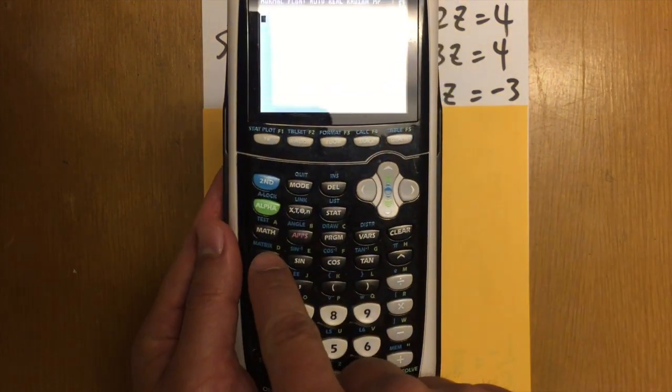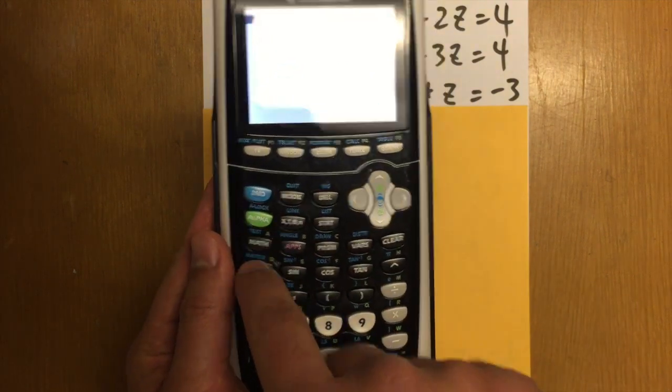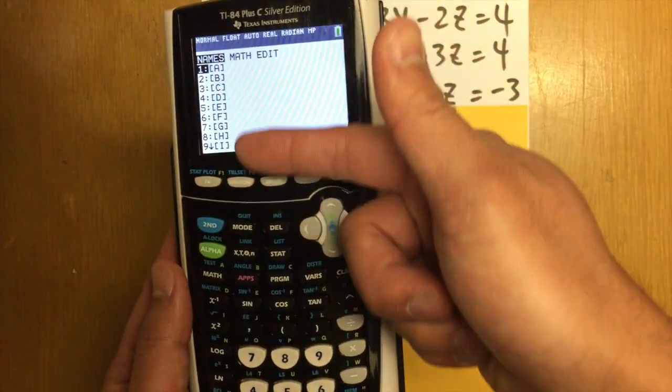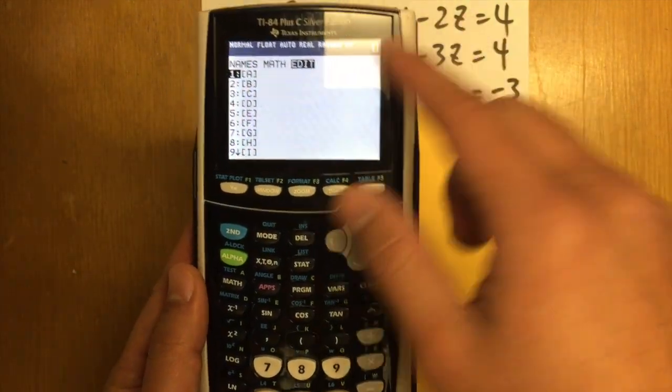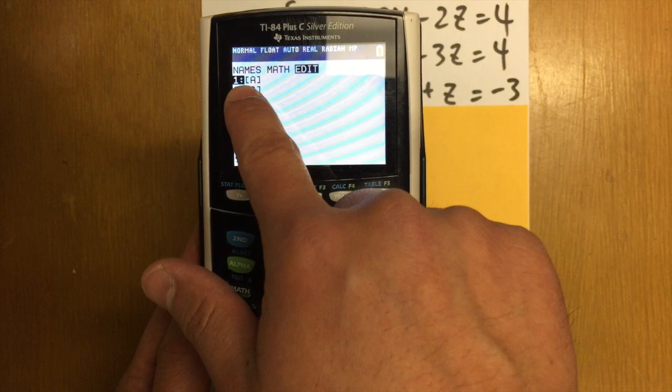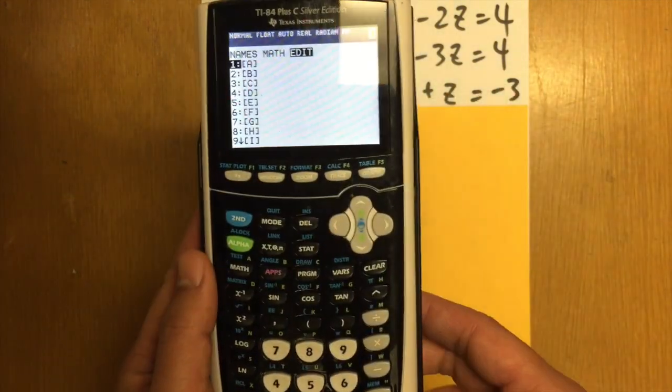First, we see that here's the matrix, and it's in blue. So we have to hit second and go to matrix. These are the names of the matrices, but we are going to first go to edit. And then we are going to choose the first one so that we can enter our matrix to be matrix A.